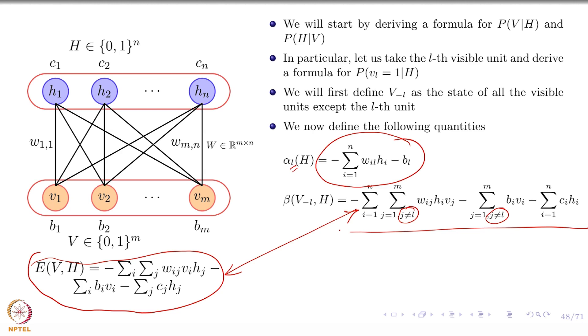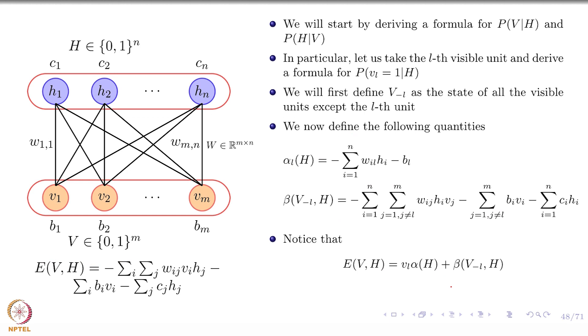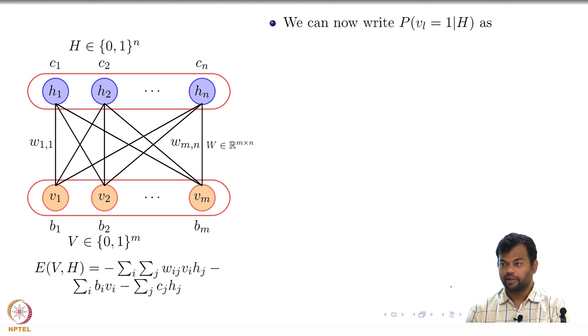Now in terms of alpha and beta, can you give me a formula for E? E(V,H) is equal to something which involves alpha and beta. Alpha plus beta, is that correct? Alpha*V_L + beta. How many agree with this? That is straightforward to see. So that is what E(V,H) is, right? It is V_L times alpha plus beta. And I have just written this particular, I mean broken it down this way, so that later on when we are deriving something, it would be easy to cancel out some terms and so on.